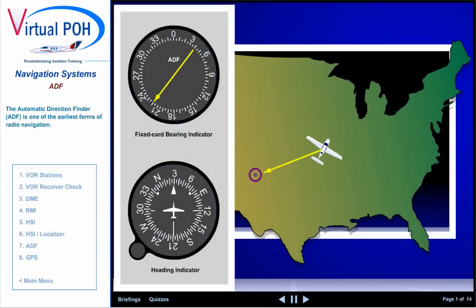The Automatic Direction Finder, ADF, is one of the earliest forms of radio navigation. The ADF may be used with a non-directional radio beacon, NDB, or a commercial AM radio station.